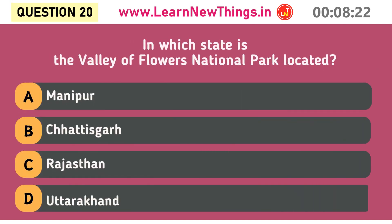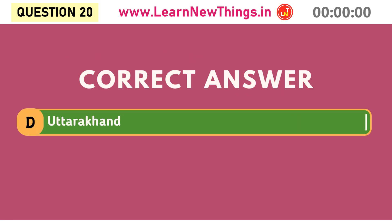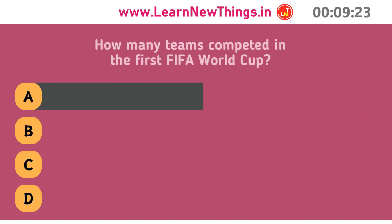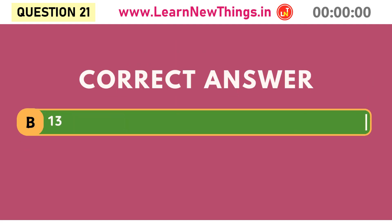In which state is the Valley of Flowers National Park located? Uttarakhand. How many teams competed in the first FIFA World Cup? Thirteen.